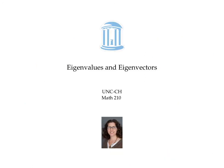In this video, we found the eigenvalues of a matrix A by setting the determinant of A minus lambda I equal to zero, and we found the corresponding eigenvectors by solving the equation (A minus lambda I) times x equals the zero vector. This expression — the determinant of A minus lambda I — is called the characteristic polynomial of A.